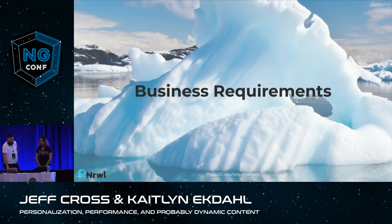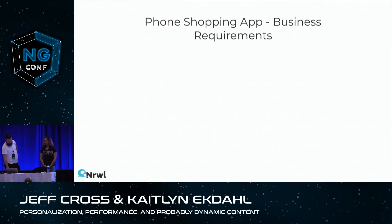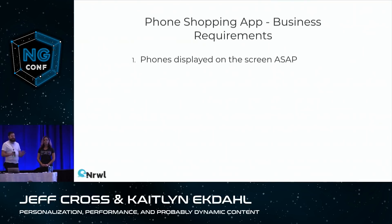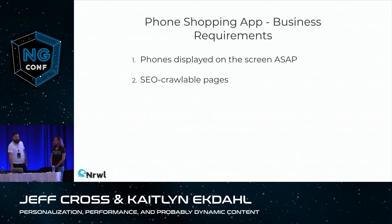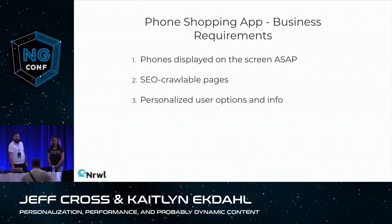When we set out to build this, we wanted to define some business requirements. We want the phones to be displayed on the screen as soon as possible — even if the page isn't interactive, we want the user to see something and feel like it's loading. This is the typical case for pre-rendering. We also want the pages to be search engine crawlable, and we want to personalize the page so users are more likely to find what they want and convert to customers.